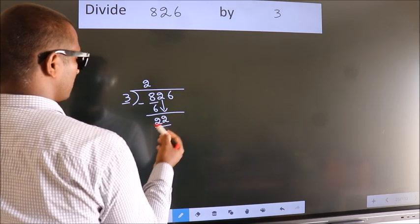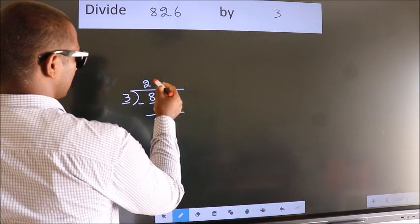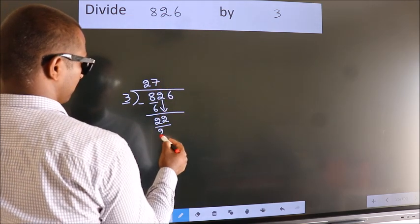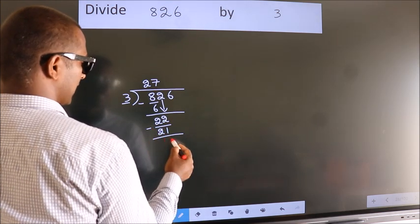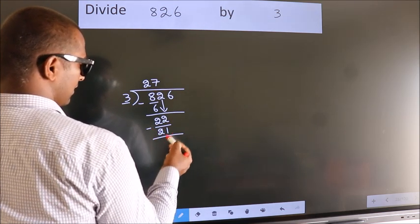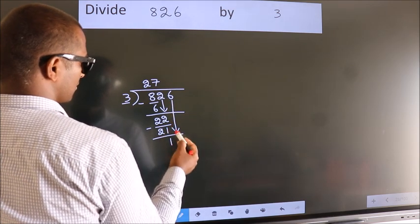So, 22. A number close to 22 in the 3 table is 3 times 7 equals 21. Now we subtract. We get 1. After this, bring down the beside number, so 6 down.